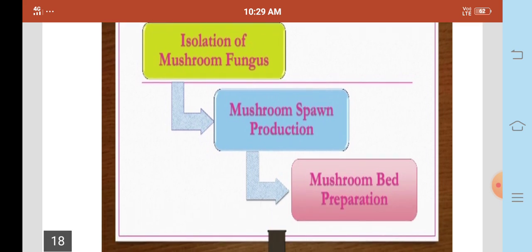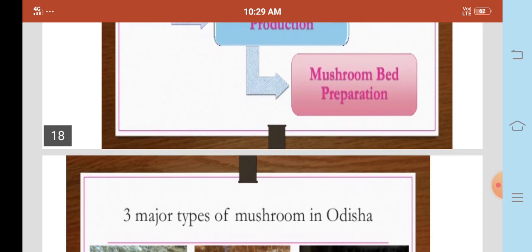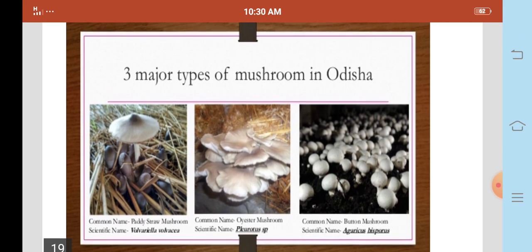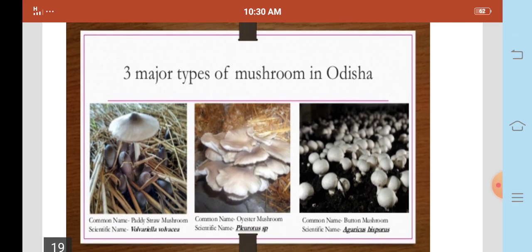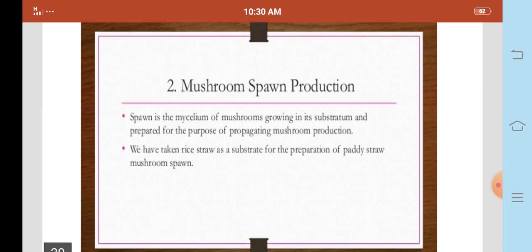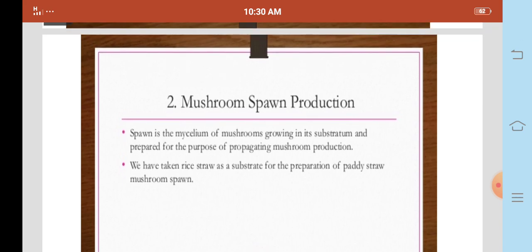We have collected the sample of three mushrooms: paddy straw, oyster and button. Mushroom spawn production. Spawn is the mycelium of mushrooms growing in the substratum and prepared for the purpose of propagating mushroom production. We have taken rice straw substrate for the preparation of paddy straw mushroom spawn.